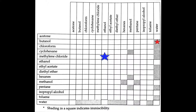Here's a table showing miscibility properties of different solvents. For example, methylene chloride, or dichloromethane, is miscible with ethanol, but butanol and water are immiscible. Feel free to pause the video and look at the table more carefully.